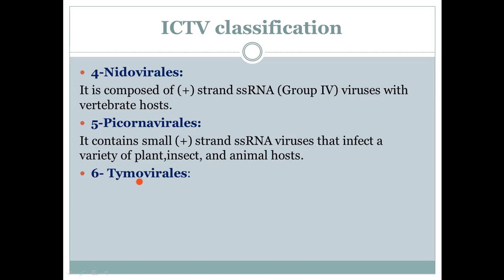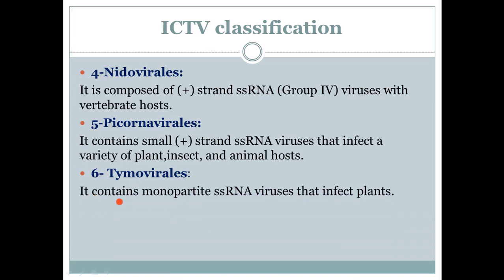The sixth order is Tymovirales. 'Tymo' means having only one partner. It contains monopartite, single-stranded RNA viruses that infect plants. Monopartite refers to a class of genome that is presented within the genome of the virus, and these viruses specifically infect plants.